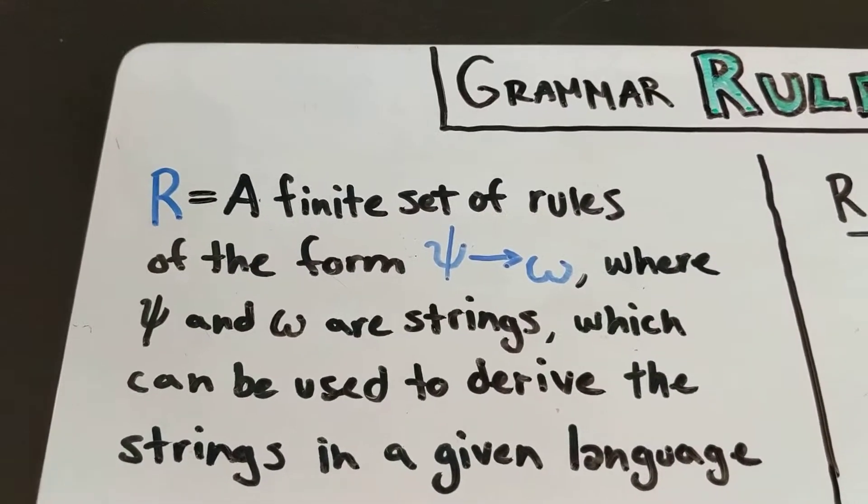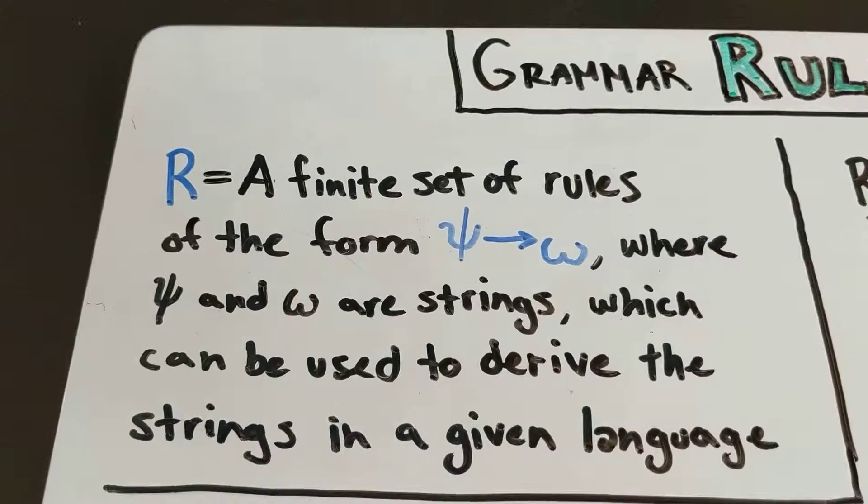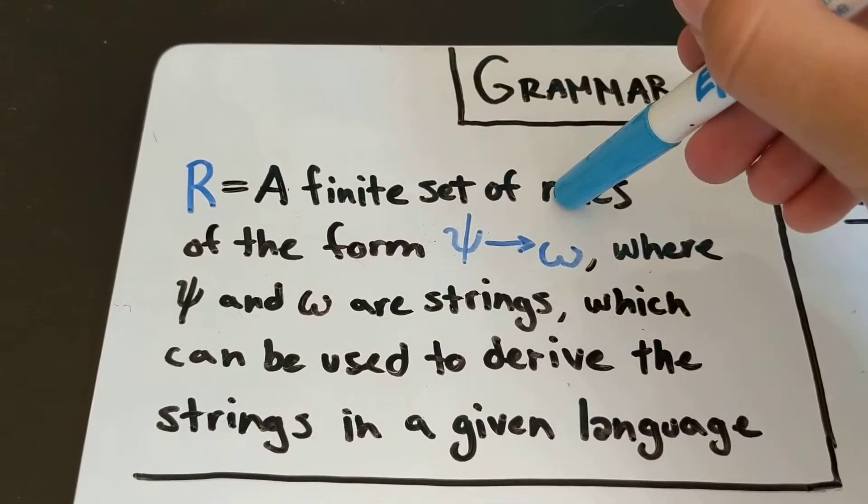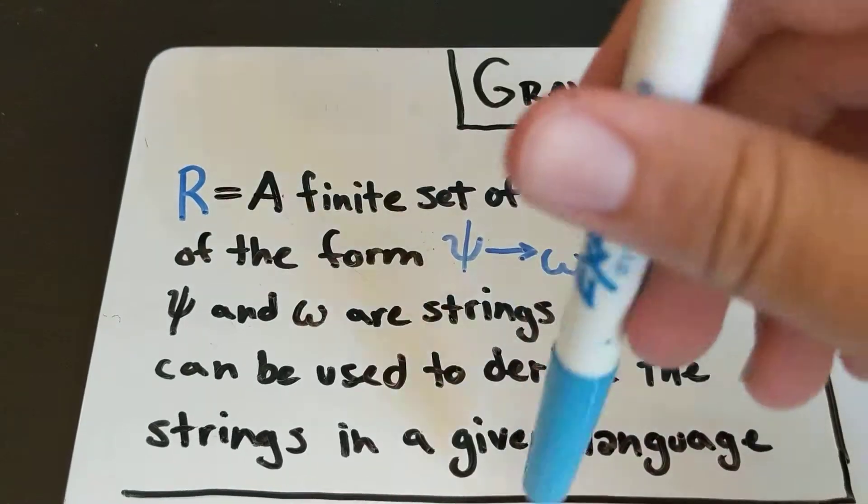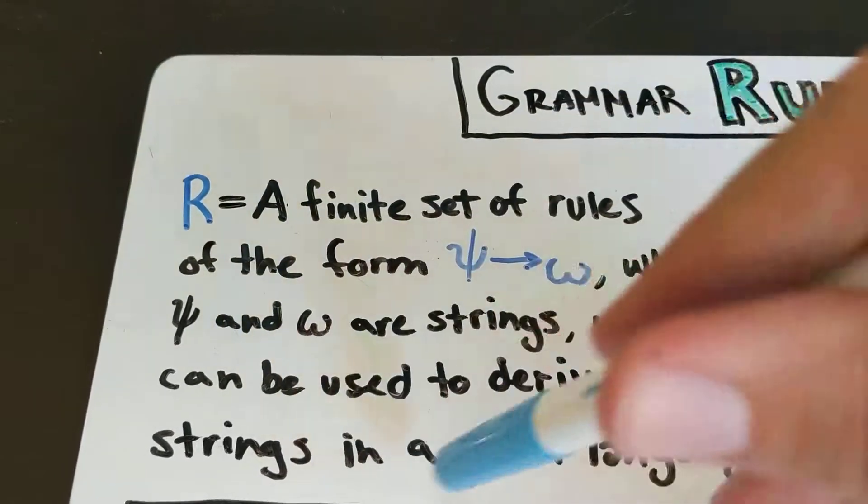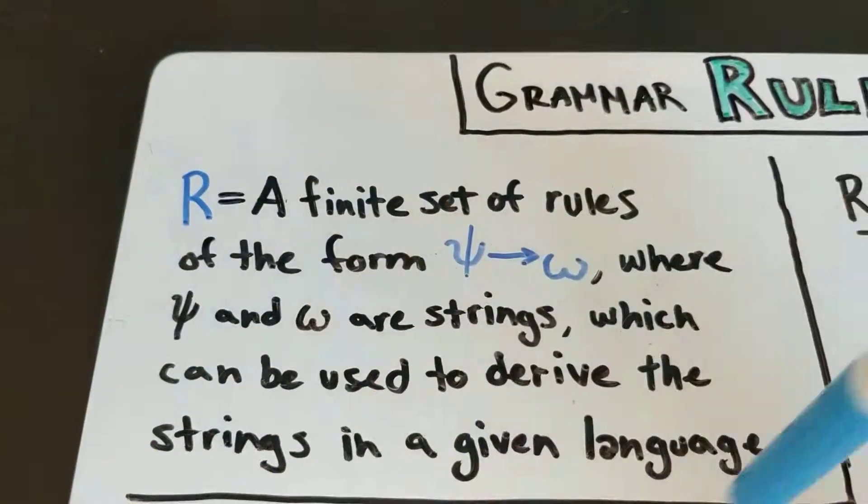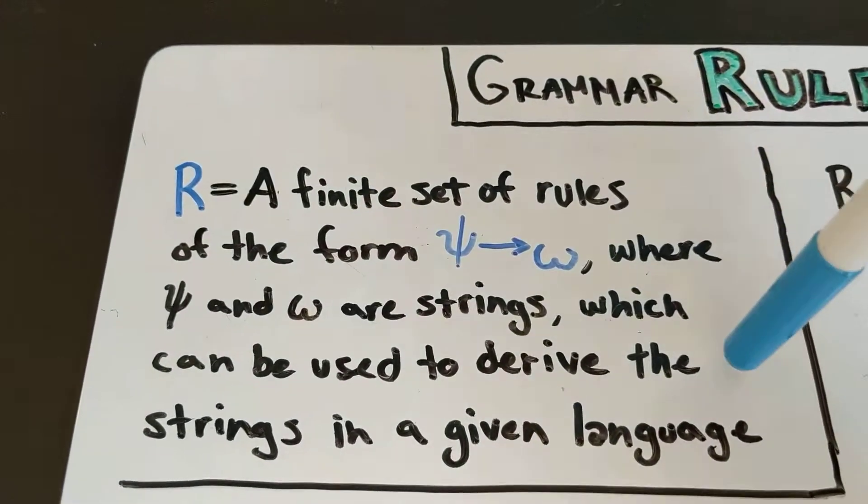So in a grammar, R is considered to be a finite set of rules that take this form where both of these Greek letters are strings and these rules can be used to derive strings in a given language. So that's a casual definition of R. We'll give a very formal definition in I think the next video.